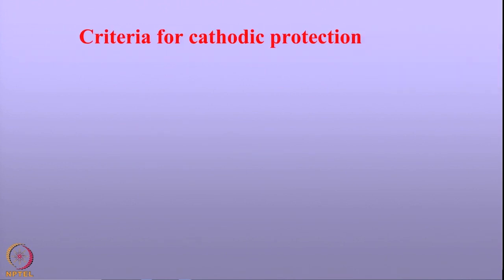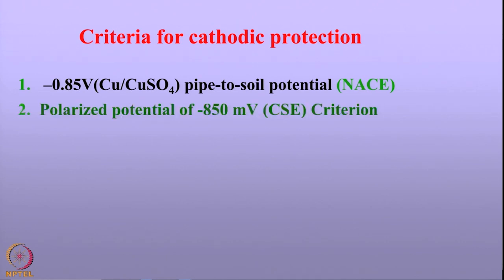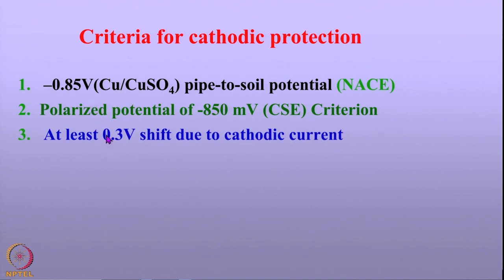There are different criteria which describe the adequacy of cathodic protection of metals. We shall see one after another what these criteria are. The first and foremost criterion widely used is minus 0.85 volt with respect to the copper/copper sulfate electrode, which is the pipe-to-soil potential for the metal. If you can hold the metal at this particular potential, then it is said to be adequately protected from corrosion. There is also a criterion based on the polarized potential of the metal, again at 0.85 volt with respect to the copper/copper sulfate electrode.